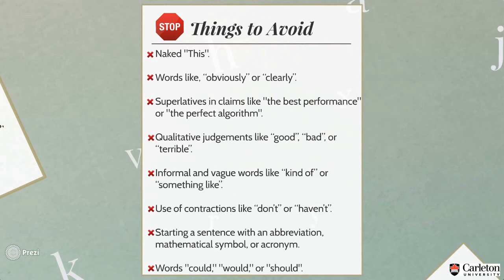Never use words like "obviously" or "clearly," as it can be insulting to those who do not get that point. Do not use superlatives in claims, like "the best algorithm" or "the perfect performance," unless it is clear from the text. Do not make qualitative judgments like "good," "bad," or "terrible." Never use phrases like "kind of" or "something like," because they are informal and vague — you need to be more precise. Do not use contractions like "don't" or "haven't"; instead, use their complete forms, like "do not" or "have not." Never start a sentence with an abbreviation, mathematical symbol, or acronym.